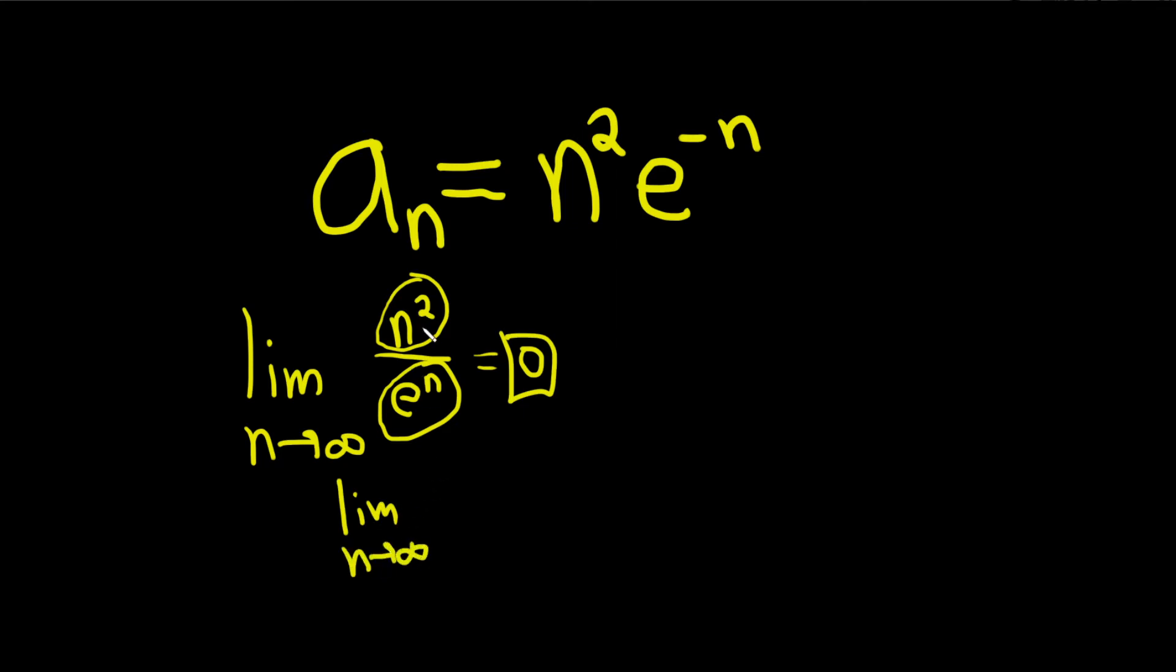So L'Hopital's rule says when you have infinity over infinity, you can just take the derivative of each. Now, you're not supposed to use L'Hopital's rule with sequences, but you can. Just when you do it, in your mind pretend they're x values. Sometimes you will run into issues. There's no apparent issues here.